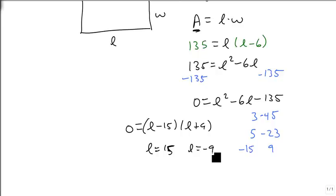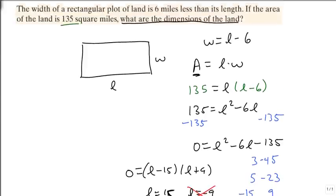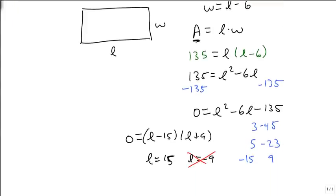And again, because this is a geometry problem, and we're dealing with real lengths, l can't be minus 9 miles. We don't know what a negative mile is when we measure it. You just can't have negative miles. So l has to be 15.